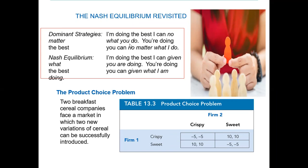If both firms produce the same product — say both produce Crispy cereal — they both end up with losses. If both produce Sweet cereal, both still get losses. But if they differentiate their production choices, each firm will have a Nash equilibrium — a better choice with a positive return in their businesses. This is the product choice problem: how many units to produce and what product to choose.